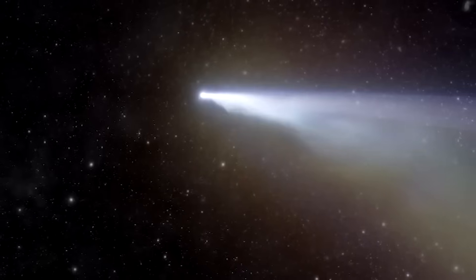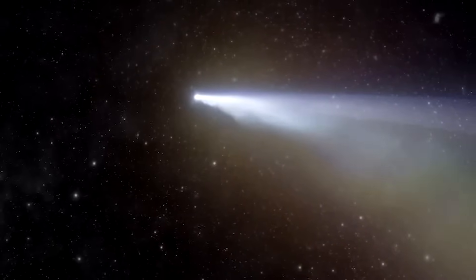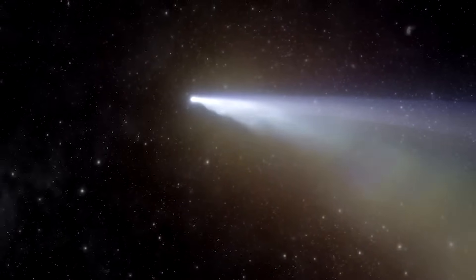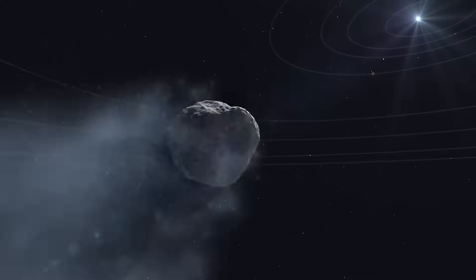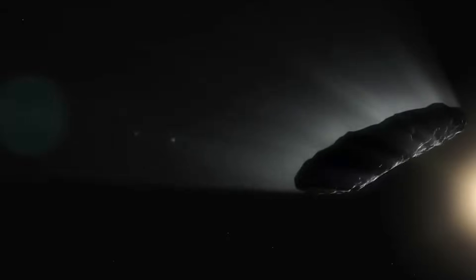Although the hydrogen gas theory has certain limitations, such as the challenge of explaining how the gas could escape from the object's surface without being hindered by gravity, it remains a valuable explanation for understanding the acceleration observed in Oumuamua. Despite its possible inconsistencies, this theory provides significant insight into elucidating the factors that may influence the object's acceleration.